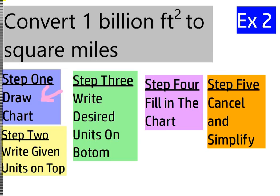Now, let's read what the next step says. You're going to write the given units on top. What did they give us? One billion square feet. So I'm going to write one billion square feet. Those are the units that they gave us.